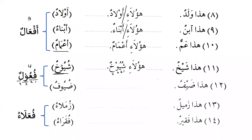هذا ضيف — this is a guest — and we want to say 'these are guests', so we say هؤلاء ضيوف. This also follows Pattern 4, فُعُول.